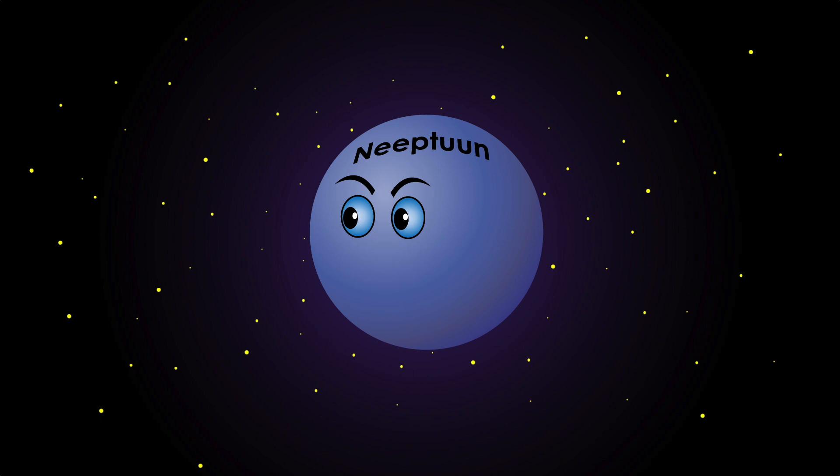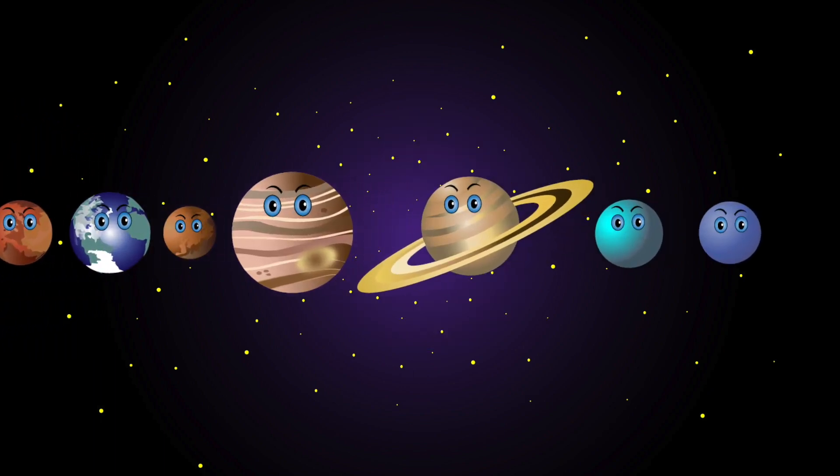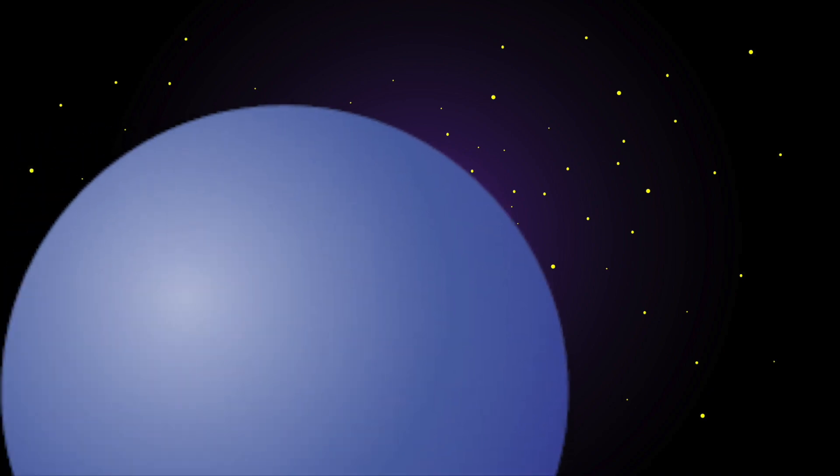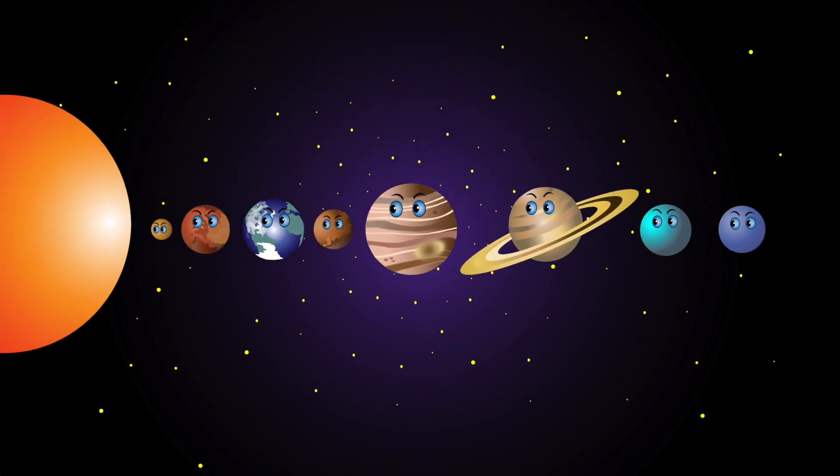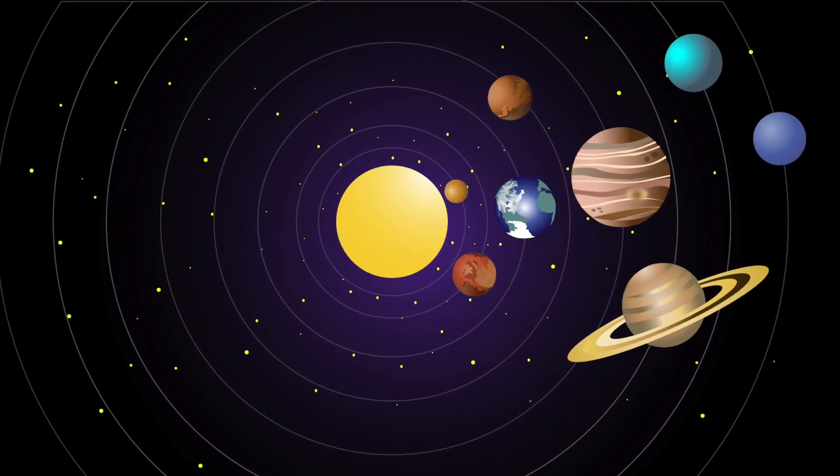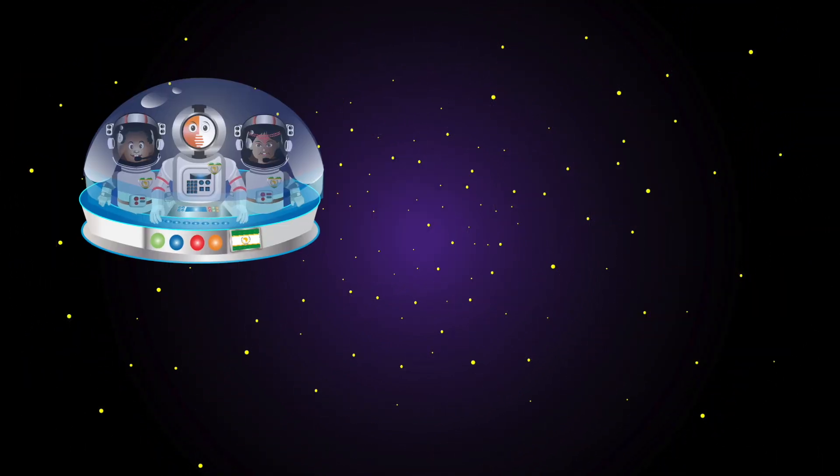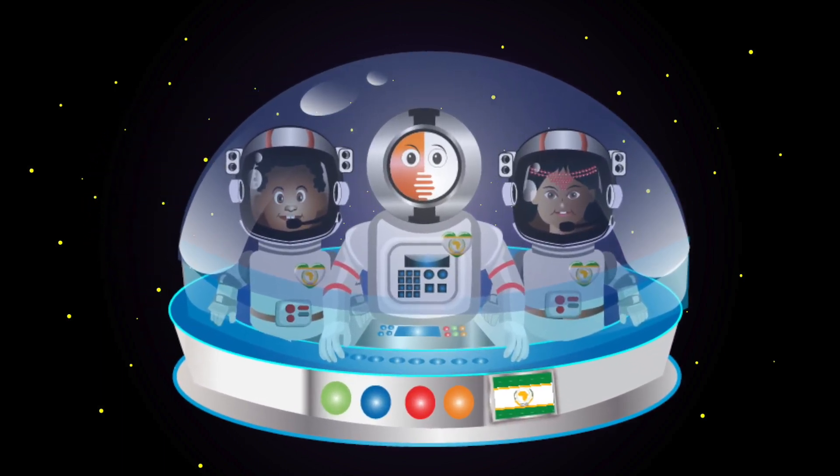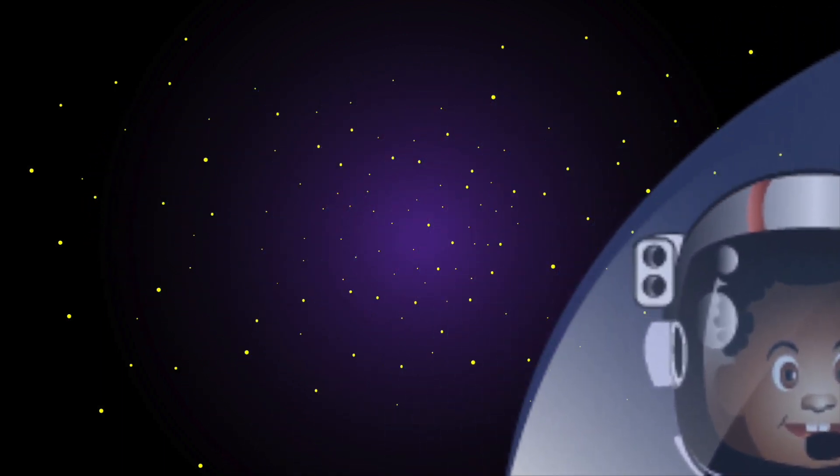My name is Neptune. I am blue in color. I'm the eighth planet from the sun. I have too many storms in my atmosphere and I'm the furthest planet from the sun. There are eight planets in our solar system. We revolve around the sun. Join us to learn about the different planets. Now sing along and have some fun.